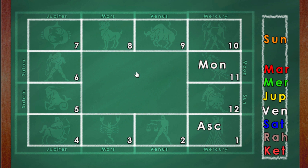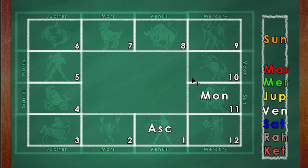In this chart, the ascendant is Virgo (Kanya Lagna) and the moon is in the 11th house. So the moon is quite happy to be here and you'll have to read it as the 11th lord in the 11th. Maharishi Parashara is all praise for this combination because the fulfillment-of-desires planet is sitting in the house of desires.